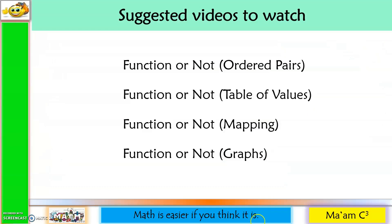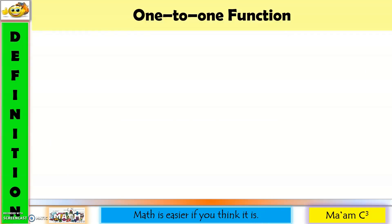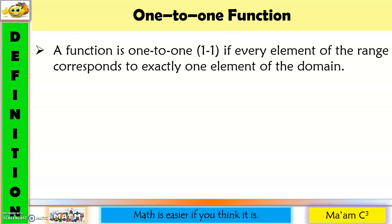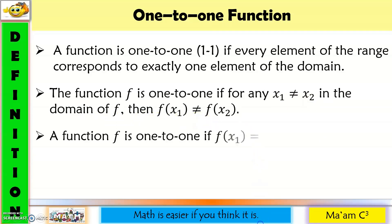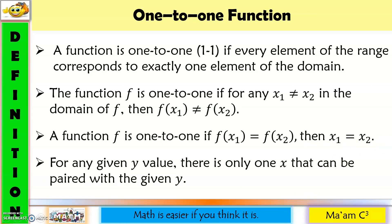As a review, I suggest that you watch my playlist on videos regarding function or not. Let us define one-to-one function. A function is one-to-one, denoted as 1-1, if every element of the range corresponds to exactly one element of the domain. It means for any x₁ not equal to x₂ in the domain of f, then f(x₁) is also not equal to f(x₂). Or also, one-to-one if f(x₁) equals f(x₂), then x₁ equals x₂. So it means for any given y value, there is only one x that can be paired with the given y.